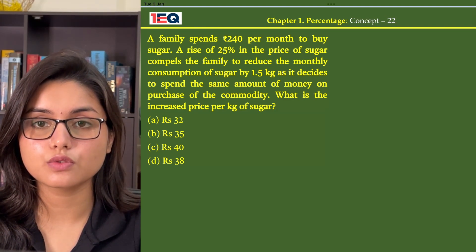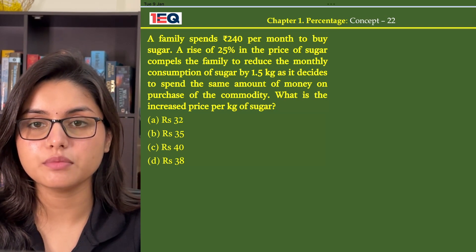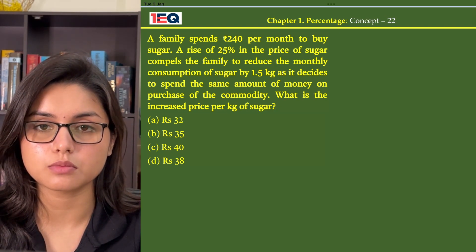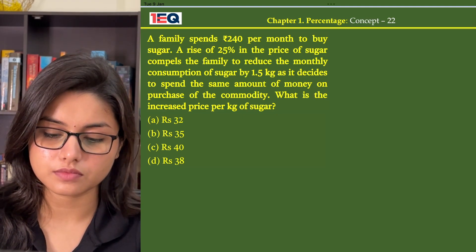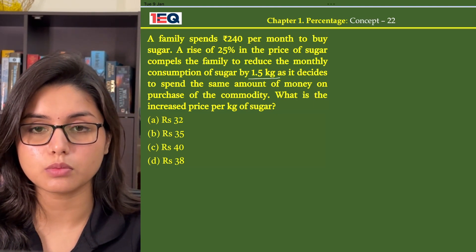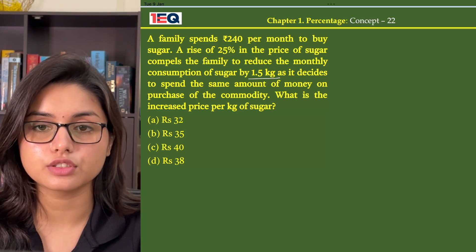A family spends ₹240 per month to buy sugar. A rise of 25% in the price of sugar compels the family to reduce the monthly consumption of sugar by 1.5 kg as it decides to spend the same amount of money on the purchase of the commodity. What is the increased price per kg of sugar?